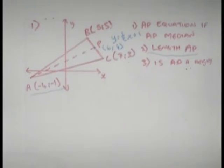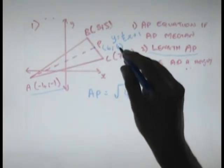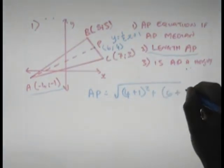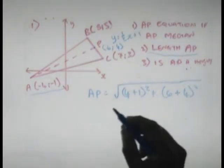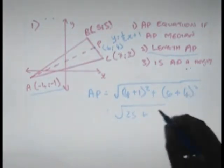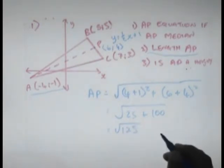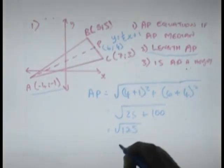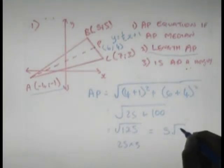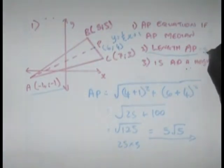Number 2: the length of AP. We're going to use the distance formula. AP = √[(y2 − y1)² + (x2 − x1)²]. That gives us √[(4 + 1)² + (6 + 4)²] = √[5² + 10²] = √[25 + 100] = √125. Now 125 = 25 × 5, and the square root of 25 is 5, so AP in simplest surd form is 5√5.